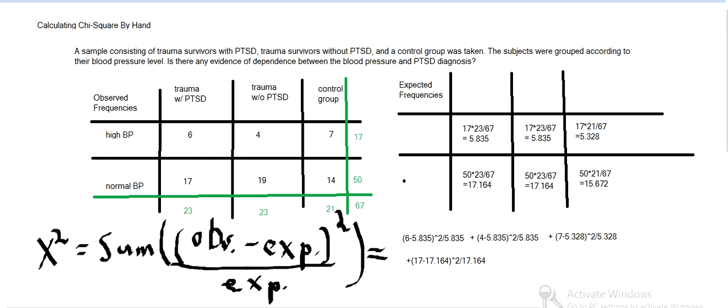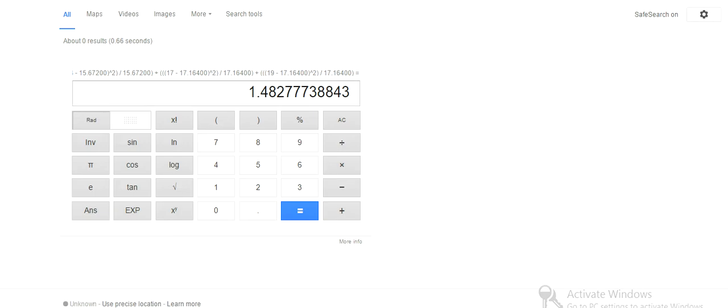Then we add 17, 17.164, 19, and 17.164, 14, and 15.672 squared. And we take all those and plug them into Google. And I did that and I'm getting 1.483.